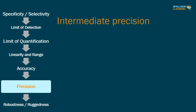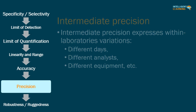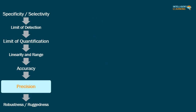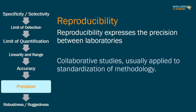Intermediate precision expresses within-laboratory variations — different days, different analysts, different equipment, etc. Reproducibility expresses the precision between laboratories in collaborative studies, and is usually applied to the standardization of methodology.